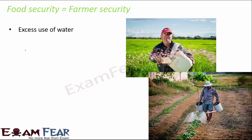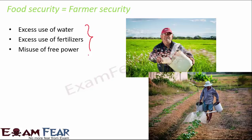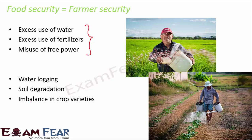Due to excess use of water, excess use of fertilizers, and misuse of free power by the big farmers who get access to everything, it is important that all these facilities are evenly distributed to all farmers — so that none misuse them and none are deprived. Excessive use is causing problems like water logging that spoils crops, and soil degradation due to overuse of fertilizers.